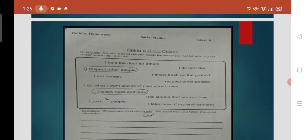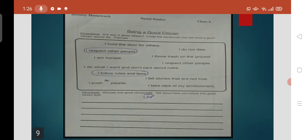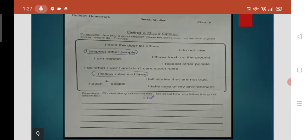Now move on to page number 9. Being a good citizen directions. Circle the sentences that tell what a good citizen would do. Students, here you can see there are some sentences below. Some sentences show that a good citizen is doing this job, and some sentences show that a good citizen does not do this job. So you have to circle those sentences which show good citizenship.